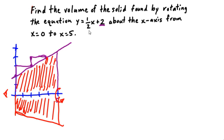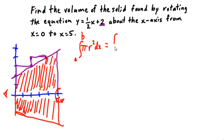So let's go ahead and set this problem up. The format we have for these problems is the integral from a to b of pi r-squared dx. In this instance, we have from zero to five of pi — and since pi is a constant I'll put it out front — times the quantity one-half x plus two, squared, dx.